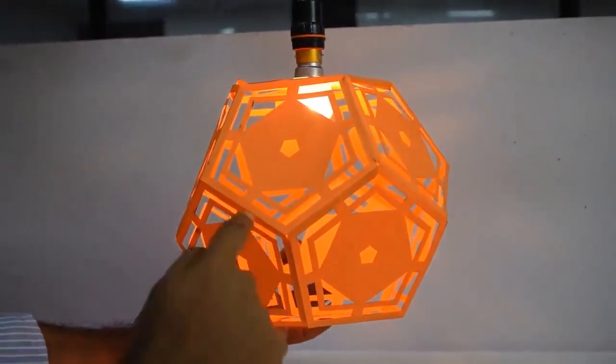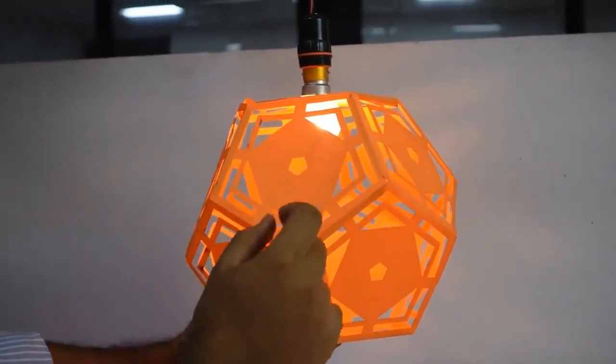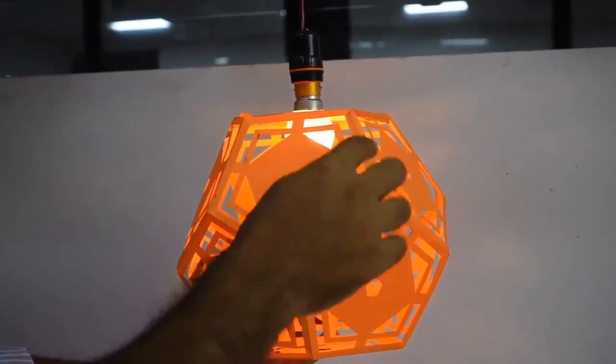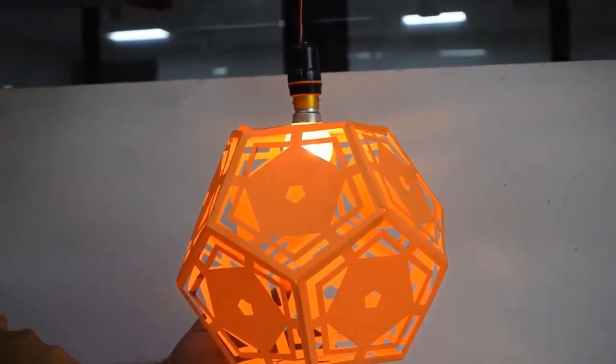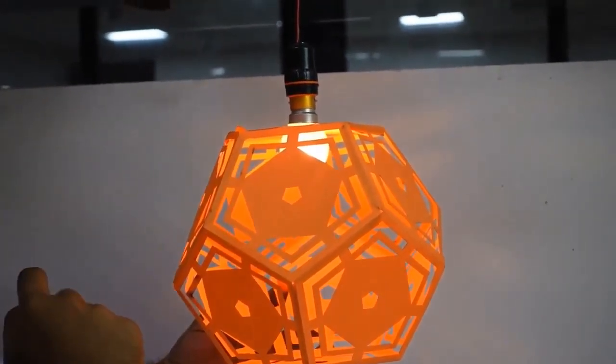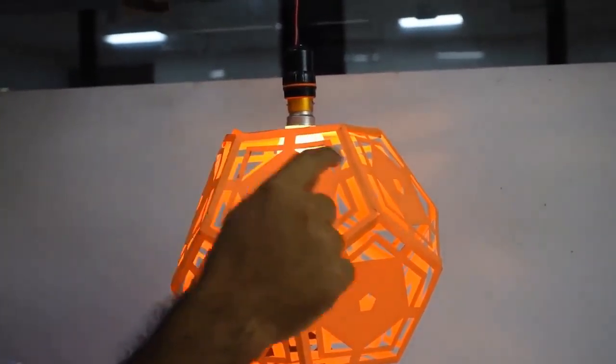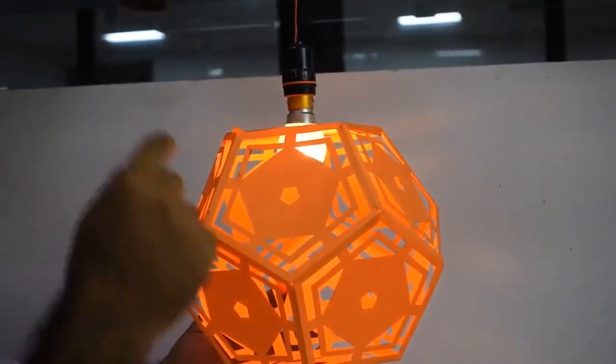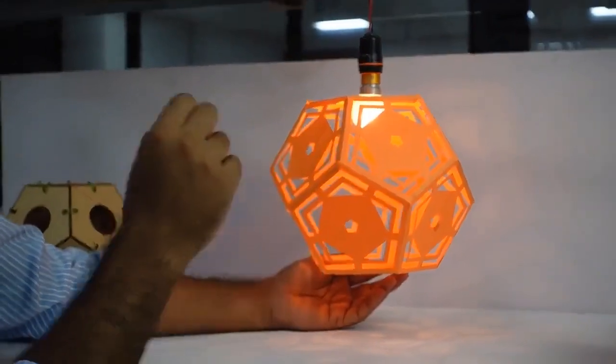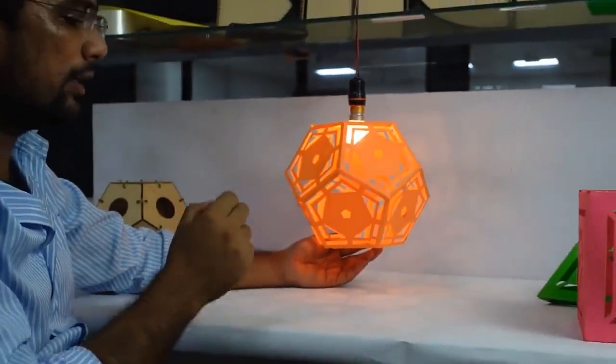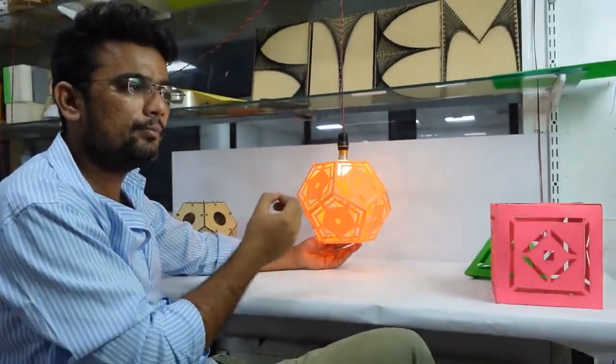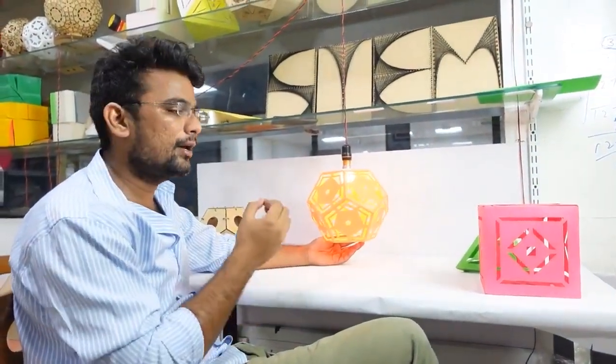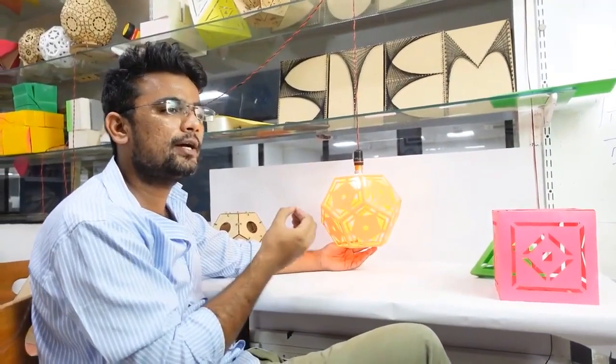One special thing about this dodecahedron is that the pentagon from which it is made is a regular pentagon. The important thing about the regular pentagon is that the ratio of its diagonal to its side is the golden ratio. The golden ratio is found everywhere in our surroundings. It may seem unheard, but if a person is beautiful, the cause lies in the golden ratio itself.